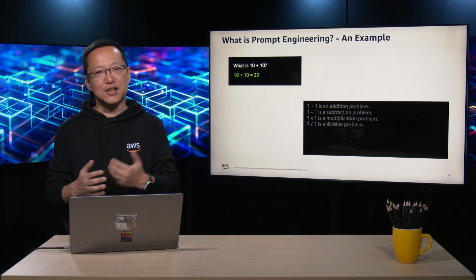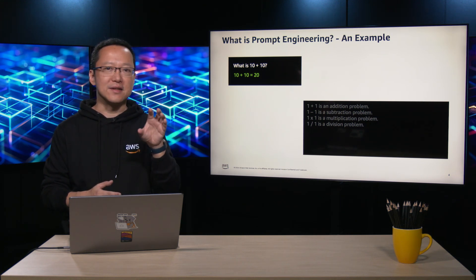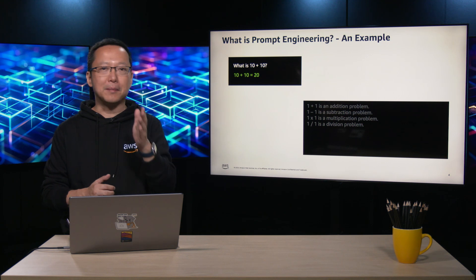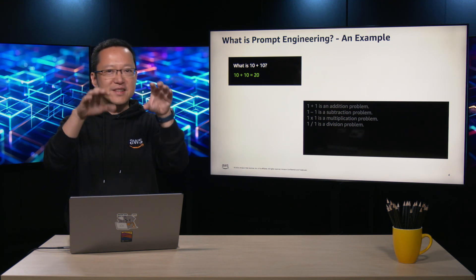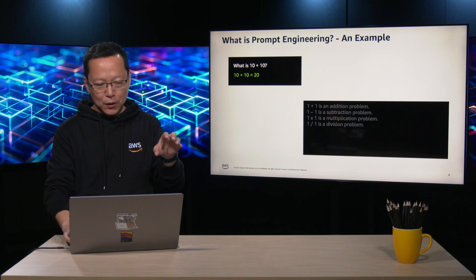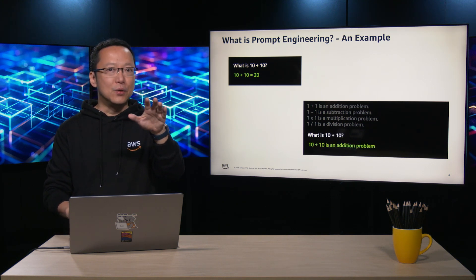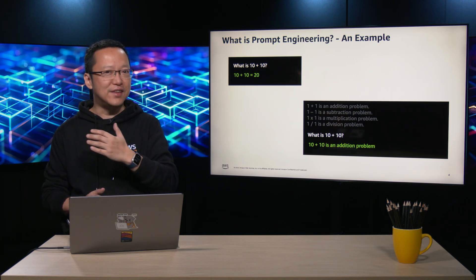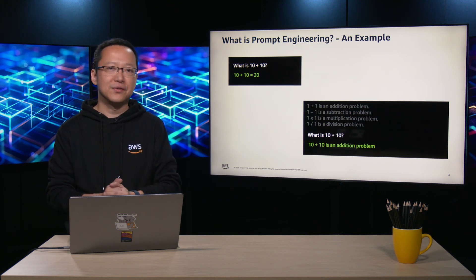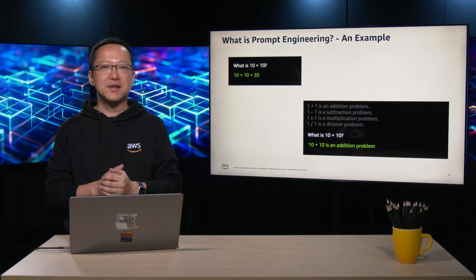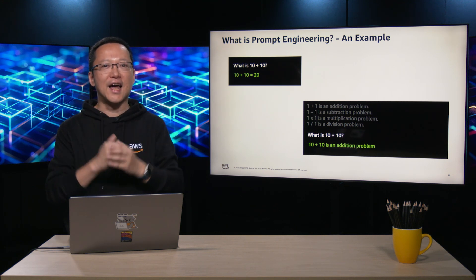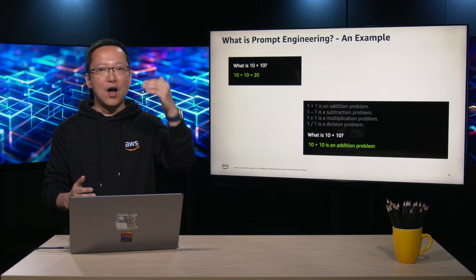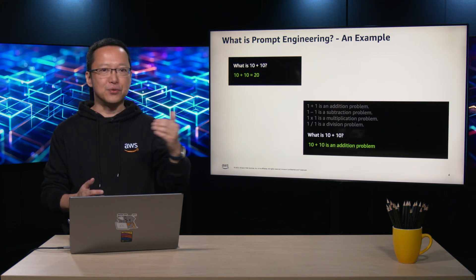For example, if teaching order of operations, you may want the large language model to identify the operation type instead of solving the problem — 1 plus 1 is an addition problem, 1 minus 1 is a subtraction problem, 1 times 1 is a multiplication problem, and 1 divided by 1 is a division problem. With this context, asking 'what is 10 plus 10' would prompt the model to respond that it is an addition problem rather than solving it. The large language model generates responses based on the provided context, and the same question prompts different responses when given different contextual information through prompt engineering.